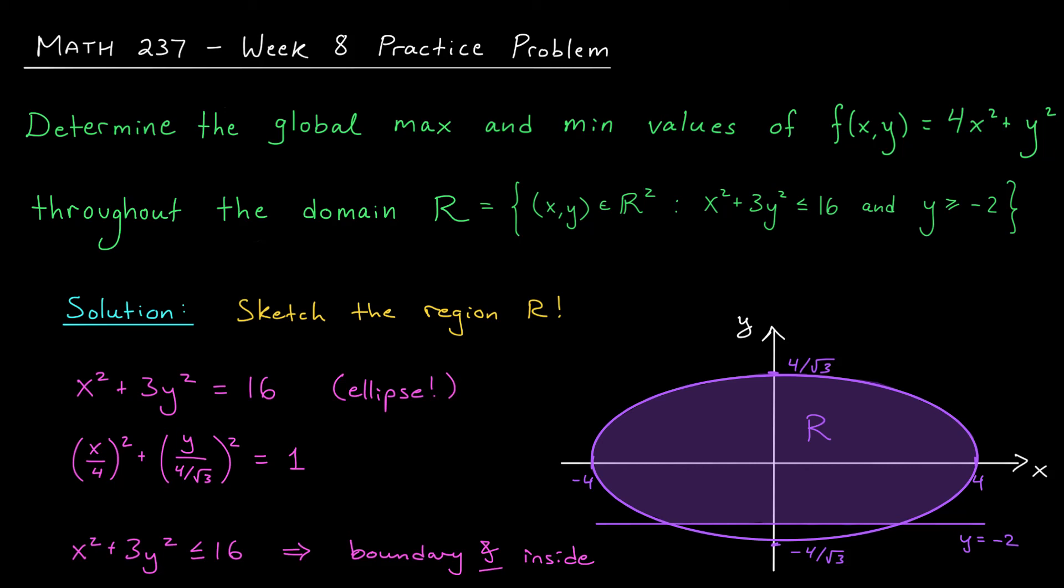As you'll see later, it'll be helpful to identify these two points of intersection, so maybe I'll leave it as an exercise to you to show that the line and the ellipse intersect at the points (-2, -2) and (2, -2). All right, let's move on to our optimization.